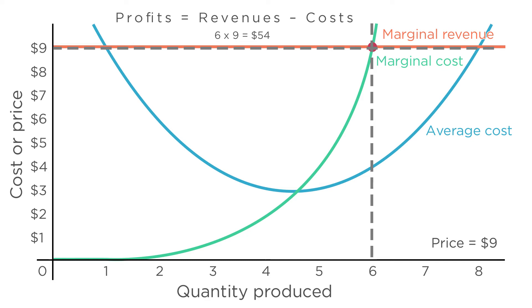Costs are just the average cost of each unit times the total units produced. Let's assume for now that average costs are $4 when the firm produces six units. If the firm makes six units at an average cost of $4, its total costs are six times four, or $24. So profit is just $54 minus $24, or $30. Where's this on the graph?